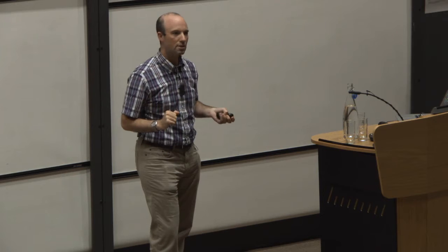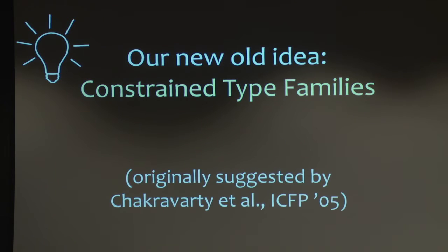Okay, so those are the features of type families that we need to have in our heads. And our new old idea is constrained type families. And I say it's an old idea because this is exactly how type families were first explained in the original paper 12 years ago. They were not implemented this way, though, because we thought we had a better idea.